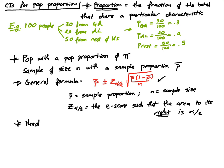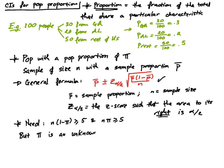Now in order for this formula to work, we need the following condition: we need n times (1 minus π) to be greater than or equal to 5, and n times π to also be greater than or equal to 5. The problem, however, is that π is an unknown quantity — it's the population proportion, and by nature that value is not known.